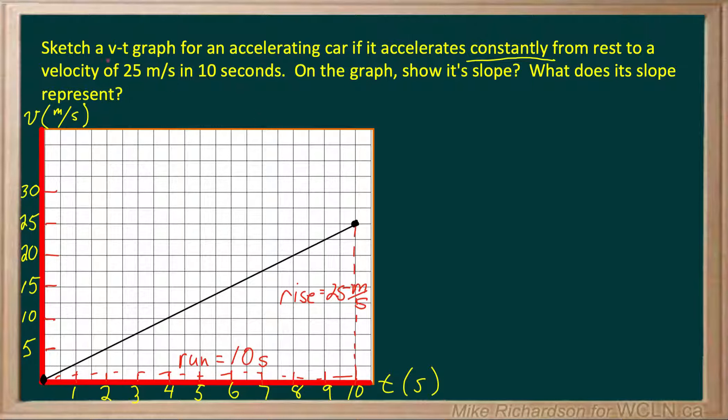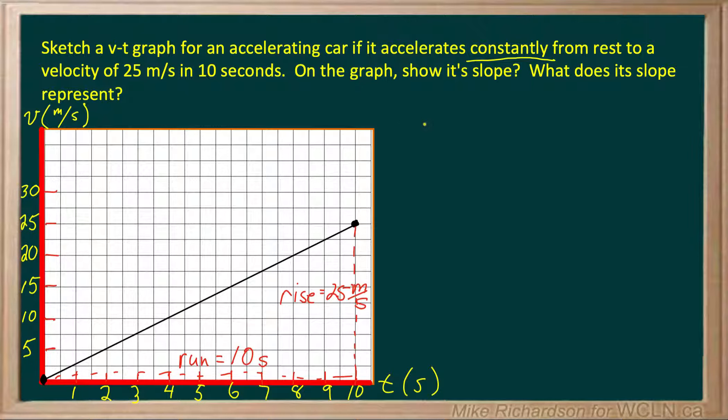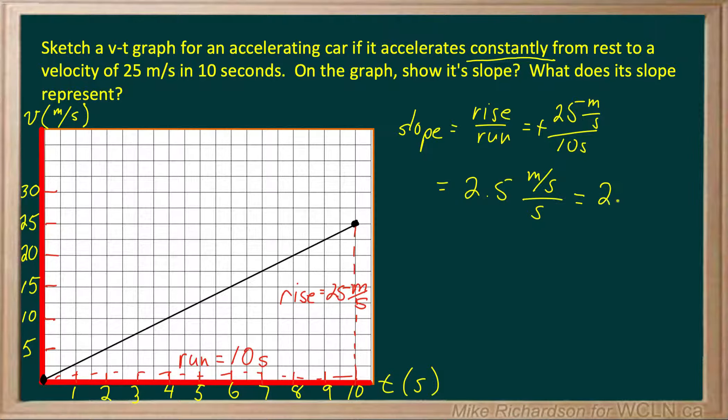Now we know that slope is rise over run. So let's calculate it and see if we can make heads or tails out of it. My rise is 25 meters per second and my run is ten seconds. The slope is positive because it's going from lower left to upper right. And I end up getting a slope that's 2.5 meters per second per second, also known as 2.5 meters per second squared.